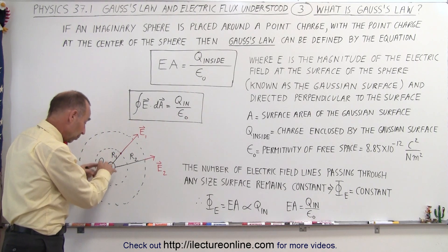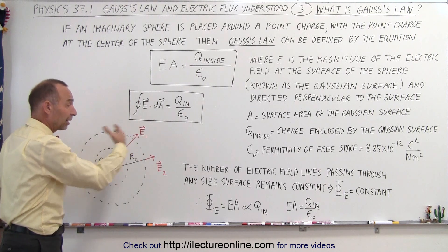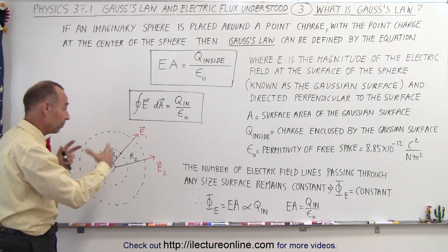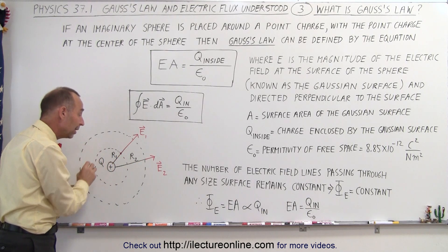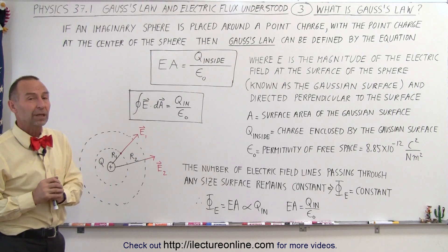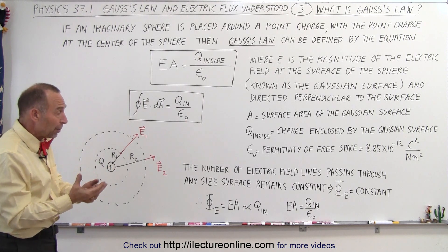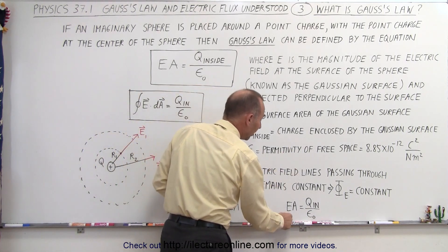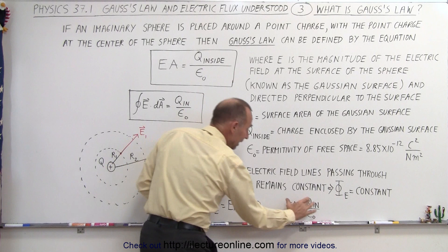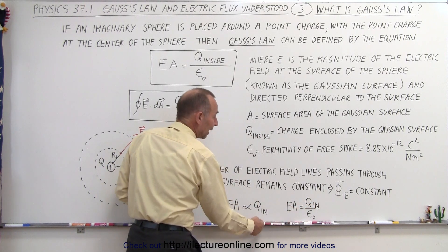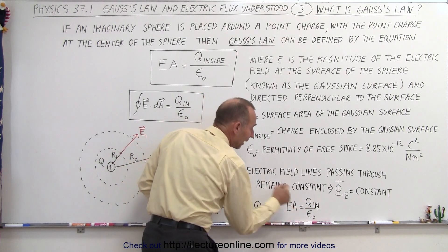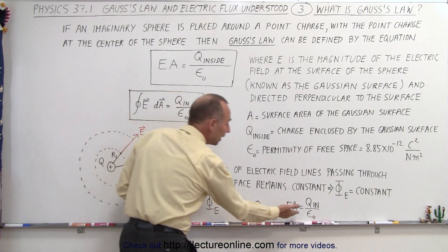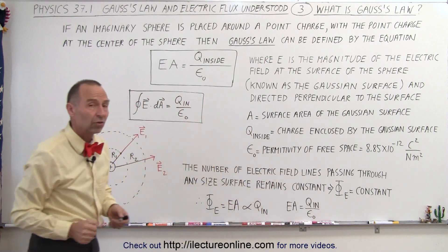If you make the charge bigger, put more charge there, there'll be more electric field lines. If you make the charge smaller, there'll be fewer lines. The amount of flux through the surface depends simply on how much charge you put in there, and nothing else. The only thing left is to come up with the proportionality constant, and that turned out to be the permittivity of free space. To turn this proportionality into an equation, you divide the charge inside the surface by epsilon sub nought, the permittivity of free space — and that is Gauss's Law.